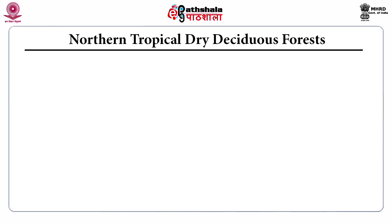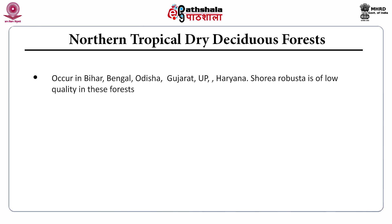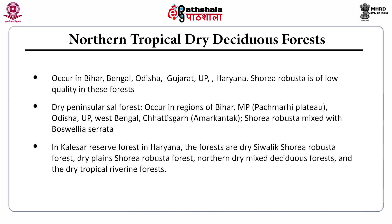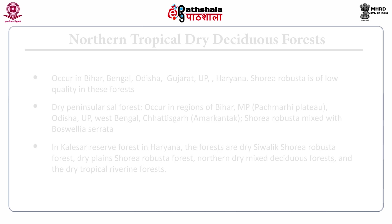The northern tropical dry deciduous forests occur in Bihar, Odisha, UP, and Haryana, where Shorea robusta is low quality. Dry peninsular sal forests occur in Bihar, Madhya Pradesh — represented by the Pachmarhi Plateau — Odisha, UP, West Bengal, and Chhattisgarh, including Amarkantak National Park, where Shorea robusta is mixed with Boswellia serrata.